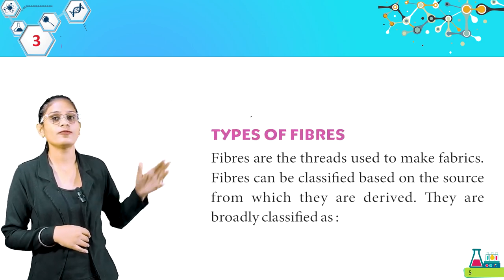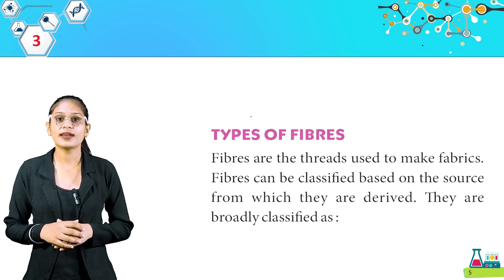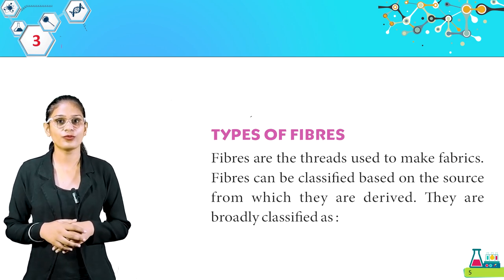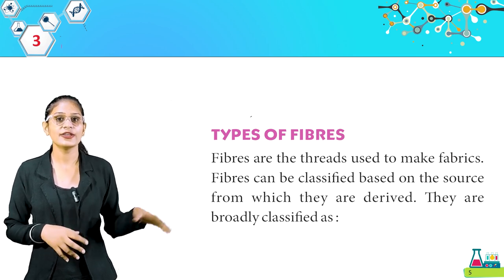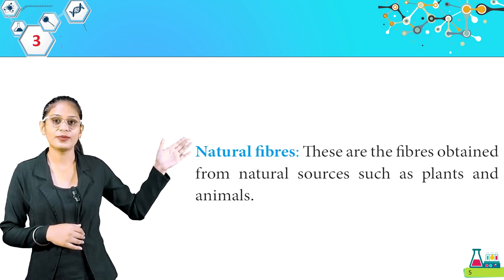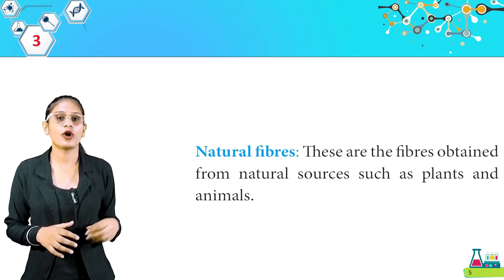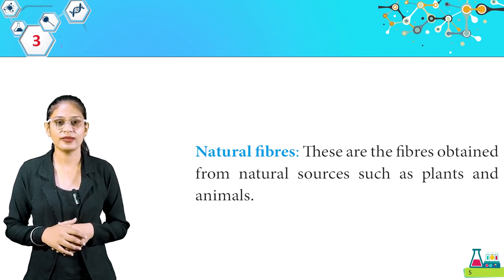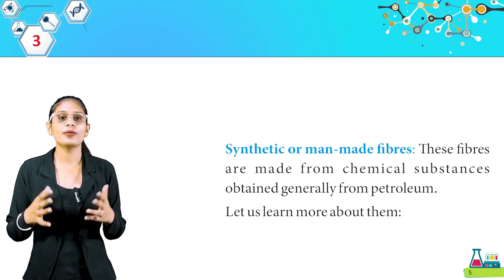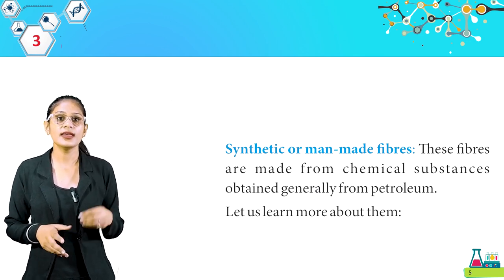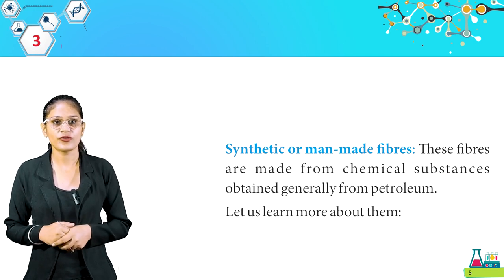Here are the types of fibers. Fibers are the threads used to make fabrics. Fibers can be classified based on the source from which they are derived. They are broadly classified as natural fibers and synthetic or man-made fibers. Natural fibers are obtained from natural sources such as plants and animals. Synthetic fibers are made from chemical substances obtained generally from petroleum.